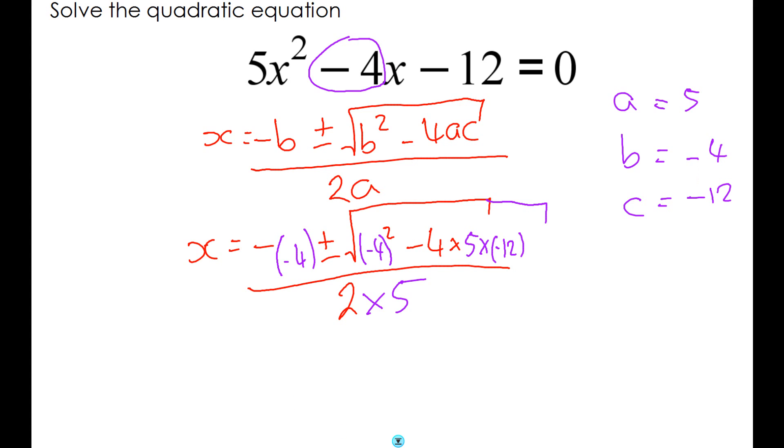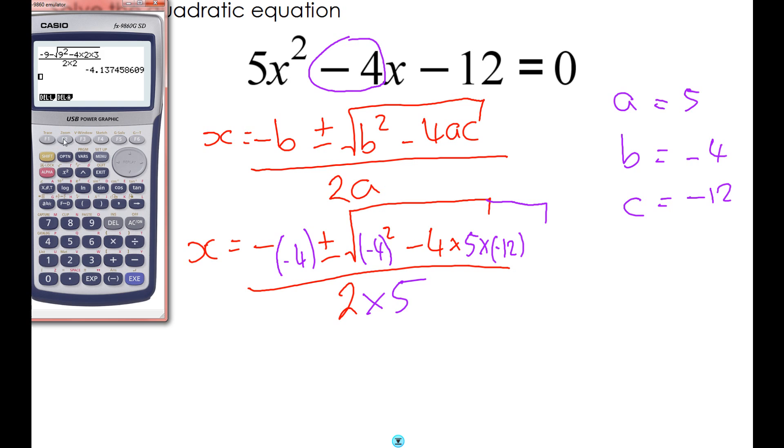At this point, if you put all of that into your calculator, it will still work. So if I start again and I put -(-4) plus, then again keeping the negative numbers in brackets will help make sure I don't make any mistakes with the calculator. Take away 4 × 5 × -12, all over 2 × 5. That gives me one of my answers.